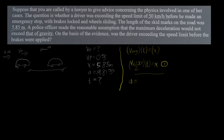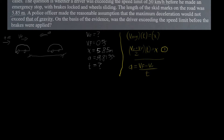The second equation is: acceleration equals the change in velocity over time, expressed as (V_f − V₀) / t. If we isolate for t, then time equals (V_f − V₀) / a. We can call this equation two.